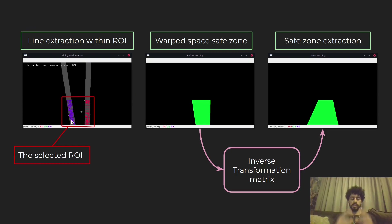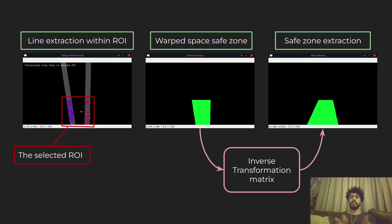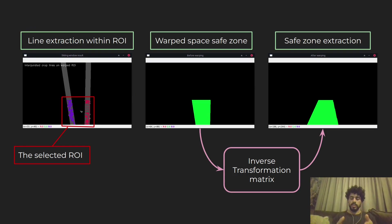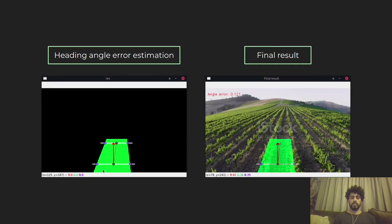Then I apply my region of interest again, since I'm only interested in the area right in front of me. I cut the lines within this area — this is the safe zone I can navigate within. But remember, we're still in the warped bird's eye perspective space. So I apply the inverse transformation matrix to get back our lines within the real-world view of the camera.